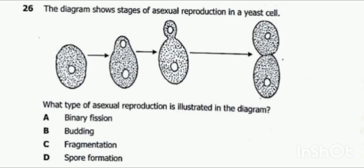The type of asexual reproduction illustrated is budding. So the answer is B, budding.